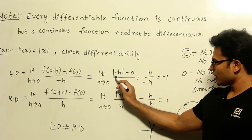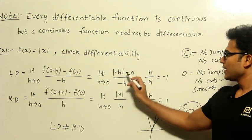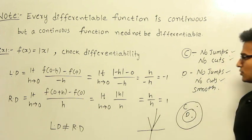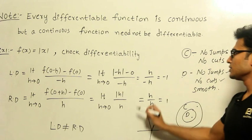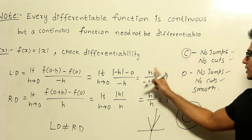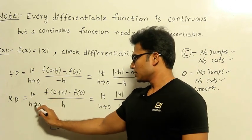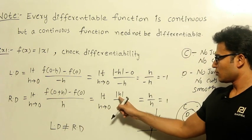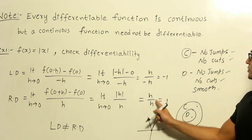The key thing about mod x to remember is: once you remove mod x, whatever result you get should be a positive number. Since h is always a small positive difference in these limits, −h is negative. After applying the mod, the output should be positive — that is why it becomes h. So h/(−h) = −1. Now the right-hand derivative is: limit h→0 of [f(0+h) − f(0)] / h = limit h→0 of |h|/h. Since h is positive, mod h equals h, so h/h = 1.